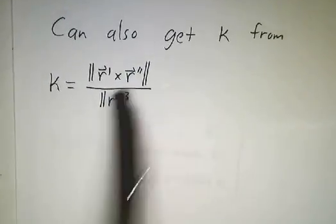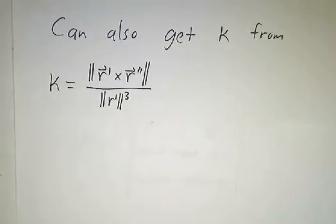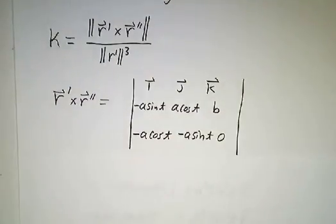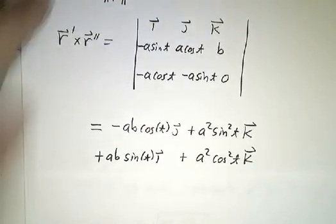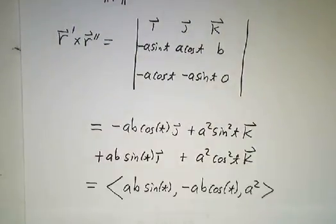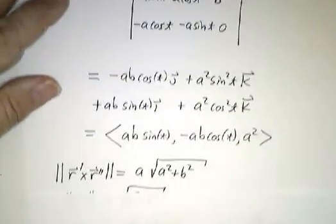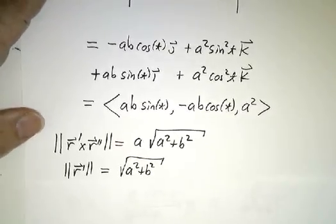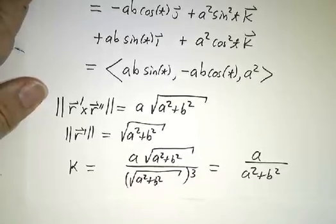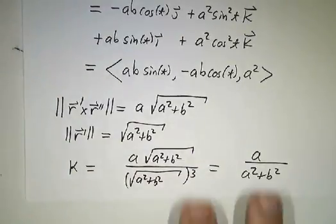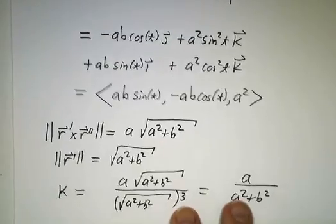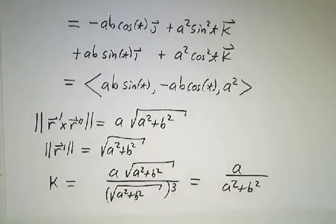There's another useful formula for getting curvature, which involves a cross product: you take the cross product of the velocity and the acceleration and divide by the speed cubed. Working that out, the cross product of the velocity and the acceleration gives you a few terms. You take the length of that and divide by the speed cubed, and you get the exact same answer as before. So you can use this cross-product formula for curvature, or you can use the notion that curvature is the rate at which the tangent vector is changing — they give the same answer.